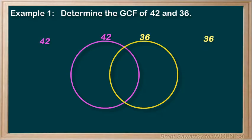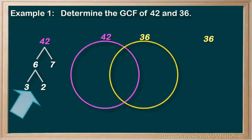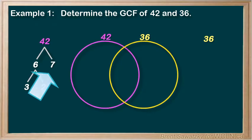For 42, we can break it down in a number of ways, but maybe you see that 42 is the same as 6 times 7. We can further break down the 6 into 3 times 2. We can't break down the 7 anymore — it's already a prime number — so we're left with three prime numbers: 3, 2, and 7.